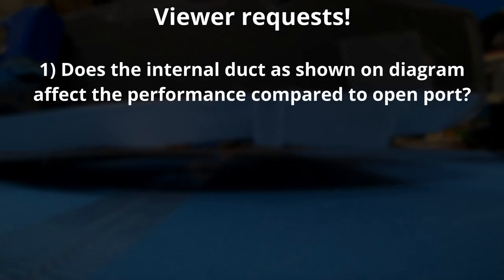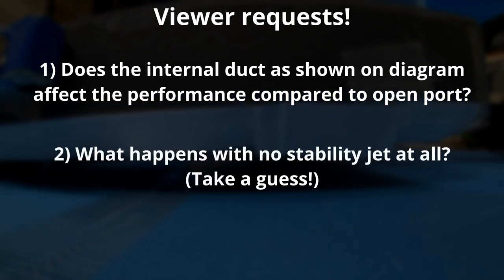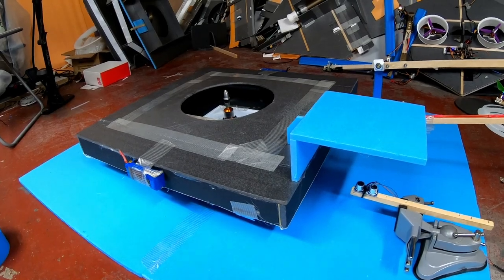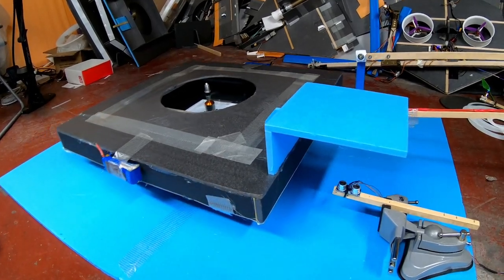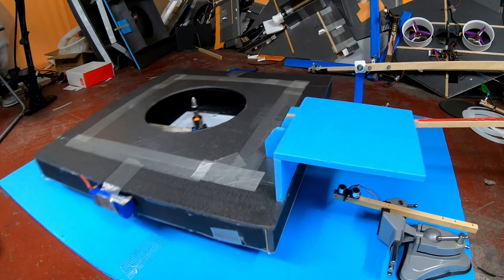Two things I've been asked are what difference does the internal duct make for the stability jet, and what happens if you tape off the stability jet completely. As to the second point, I'll get that out of the way. It's called a stability jet because if you block it off, this happens.